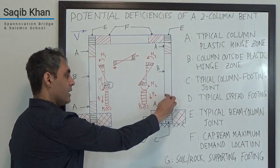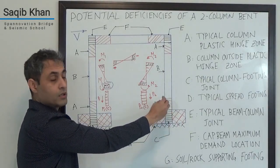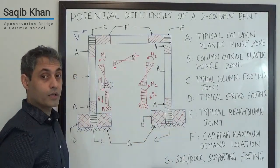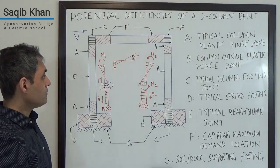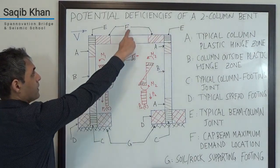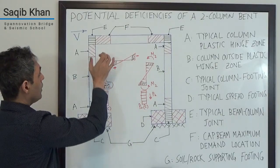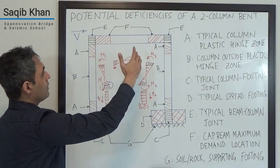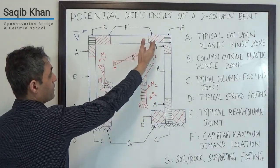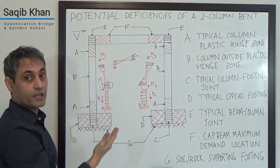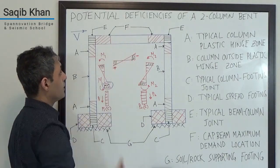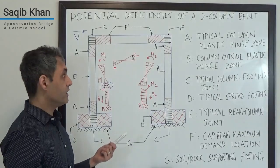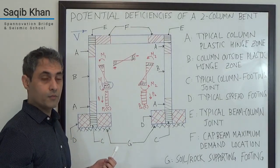We want the plastic hinging or the deformation or the damage to occur within the column and not have it penetrate into the footing or the footing joint. Then let's think about Zone F. It's the same philosophy. We do not want the demands in the cap beam to be so high that we do not have appropriate capacities. We do not want plastic hinging happening within the cap beam or having shear failure. That's the worst type of failure. It's going to be brittle. It's not going to give you much warning.